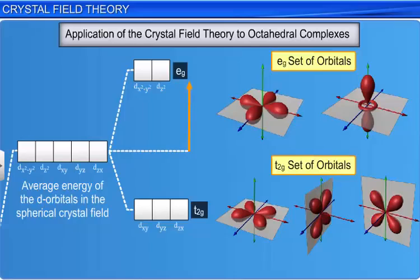Thus, under the influence of the ligands, the degeneracy of the five d-orbitals of the metal ion is lost and they are split into two groups of different energies. This effect is known as crystal field splitting.